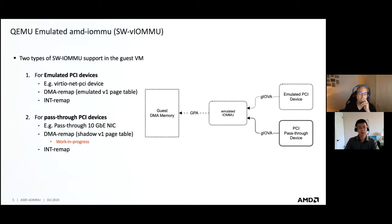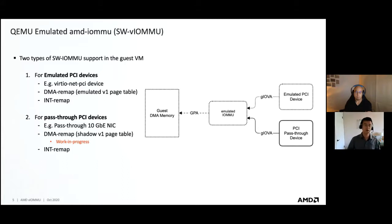For pass-through devices inside a guest VM, they can be classified into two categories. The first category is emulated PCI devices, for example like Intel E1000 NIC inside your guest VM. The second one is PCI pass-through devices, like VFIO pass-through devices — for example, passing through a 40-gig NIC into your guest VM, where you want the device managed by the AMD IOMMU driver. Both devices are supported for DMA remapping and interrupt remapping.